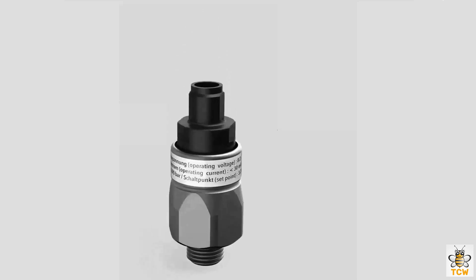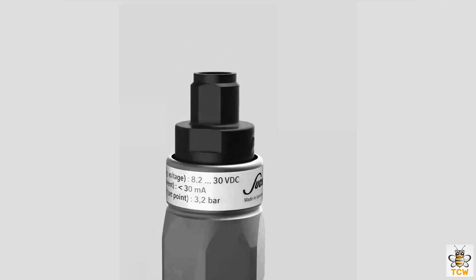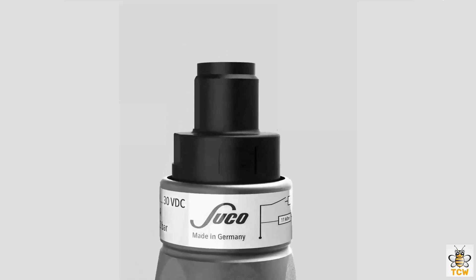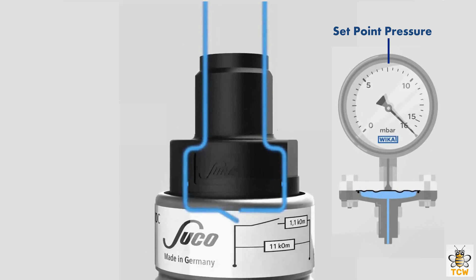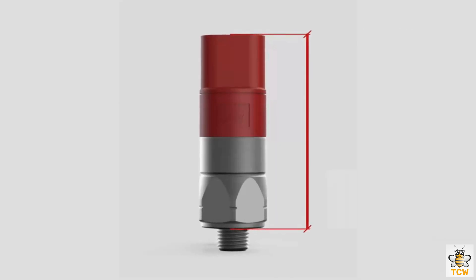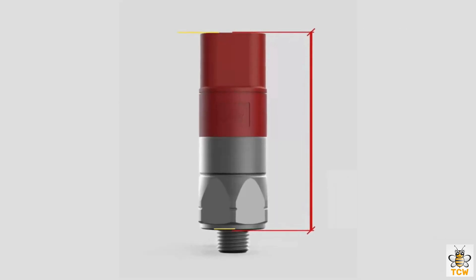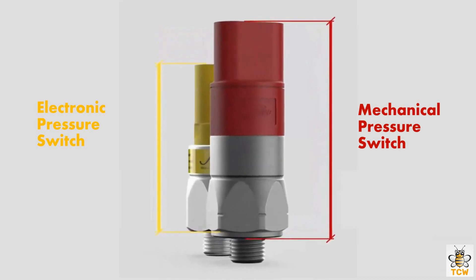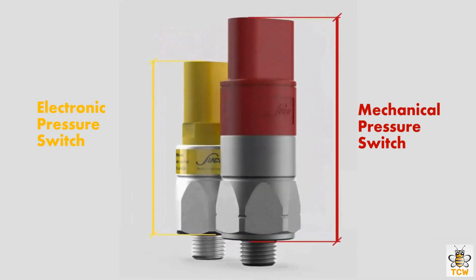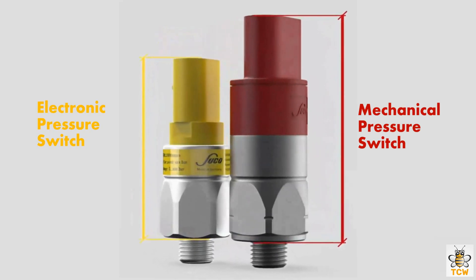A pressure switch is a pressure-actuated device which opens and closes an electrical circuit when the pressure in the system has reached the pressure value preset on the device. Based on the working mechanism, pressure switches can be categorized into two types: the mechanical pressure switch and the electronic pressure switch.